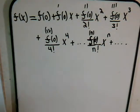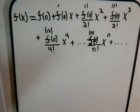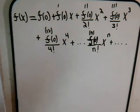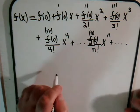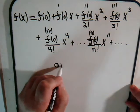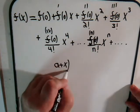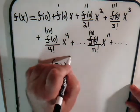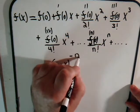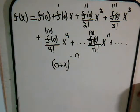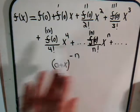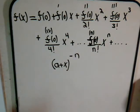This is part four in our series concerning Taylor series and the binomial expansion. In this video, what we're going to do is ask ourselves: if we have this function, a plus x, raised to a negative exponent, and if we try to expand this in a Taylor series, what kind of expression will we get?